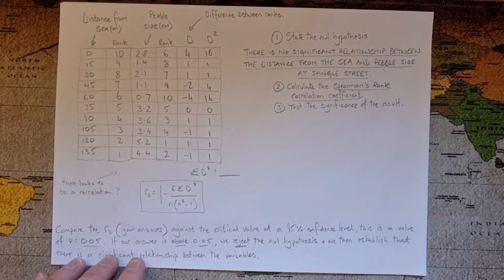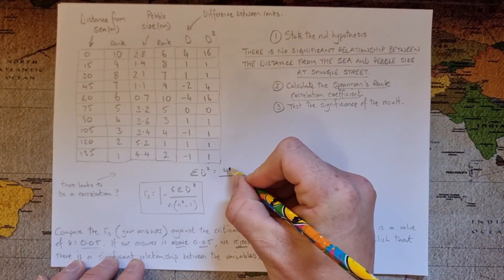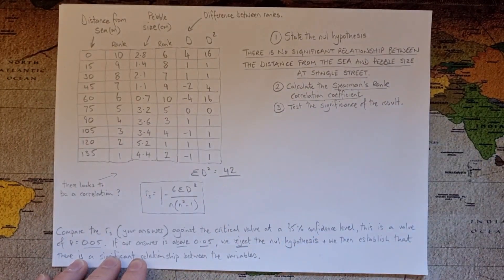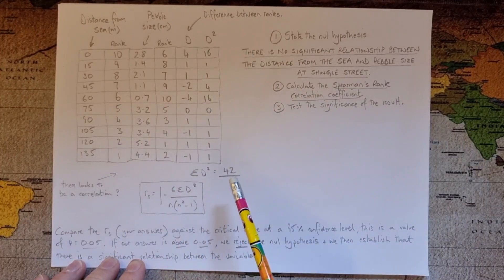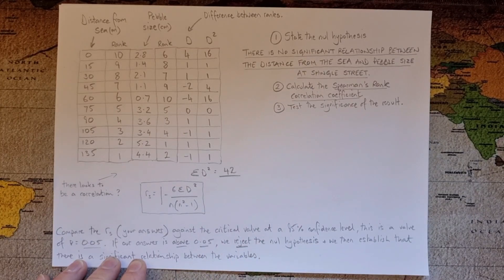Okay now all those numbers in that column, all we now need to do is to add those up and that's going to give us, let me just check that number on my calculator, doesn't really need one does it, that's going to be 42. There we go. So that's the most difficult number to work out, not that it was difficult, and then we put that number into here and we then work it through.